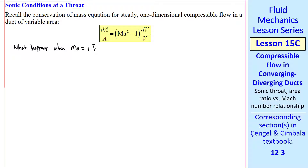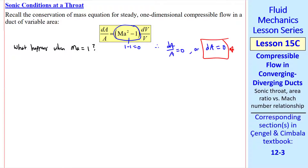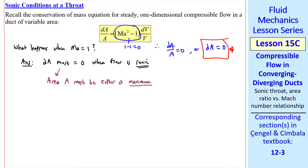What happens when the Mach number is exactly equal to 1? Well, this term becomes 0, so dA over A equals 0, or dA equals 0. So the answer is dA must equal 0 when the flow is sonic, in other words when Mach number is 1.